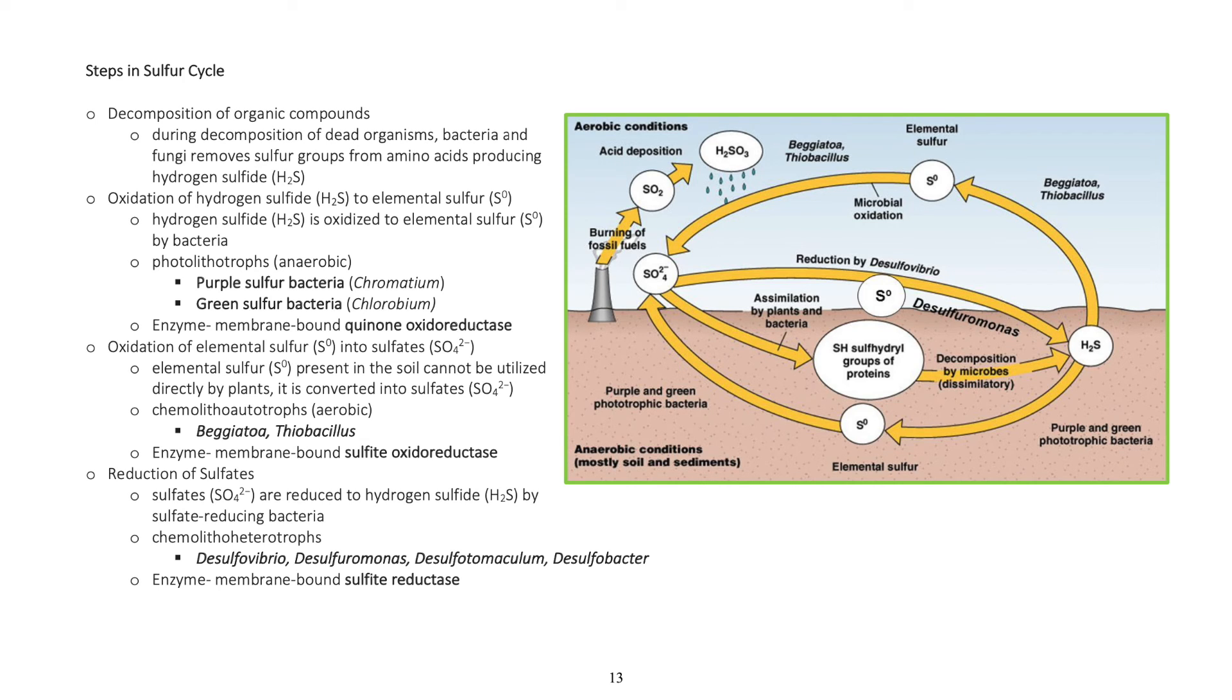Steps in sulfur cycle: Decomposition of organic compounds. During decomposition of dead organisms, bacteria and fungi remove sulfur groups from amino acids, producing hydrogen sulfide (H2S).